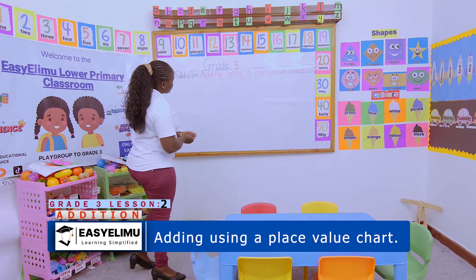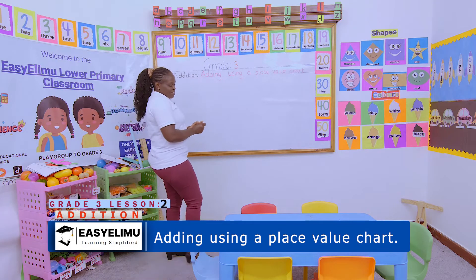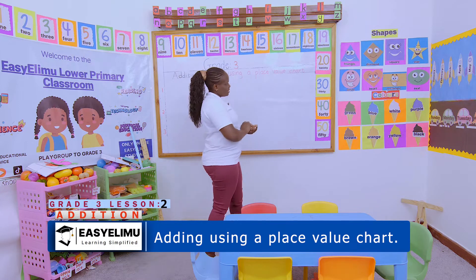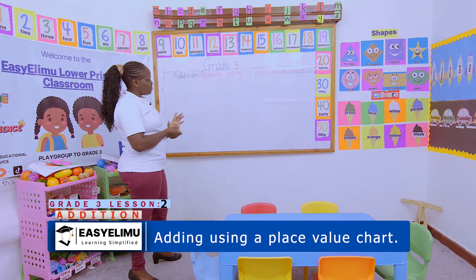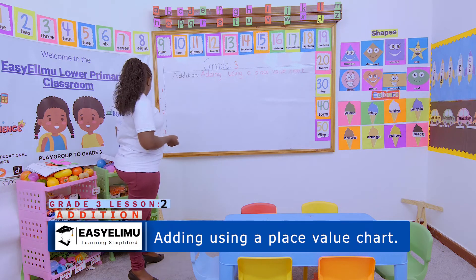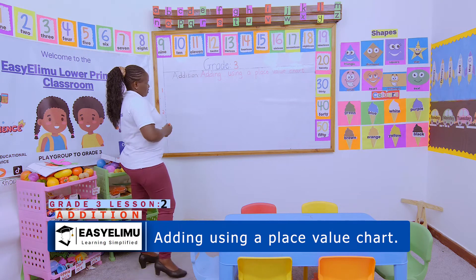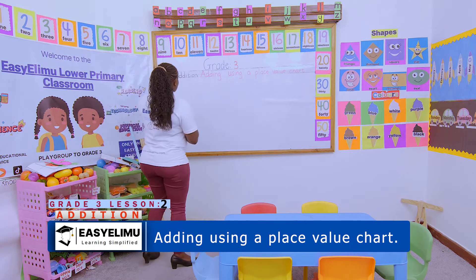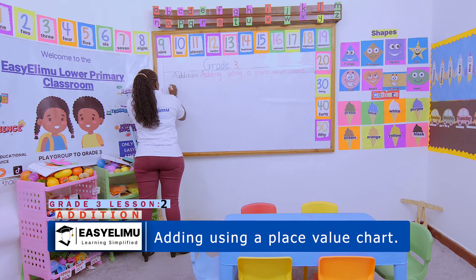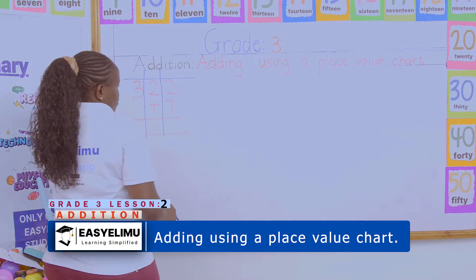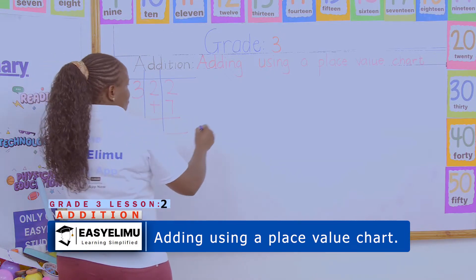Adding using place value chart. Who still does not understand what a place value chart is? What is place value first? We said place value is the number position. When I'm given a number like 322, I'm supposed to add a number like 7.